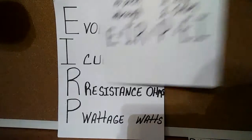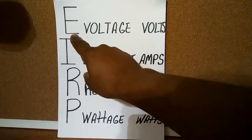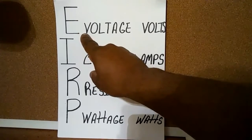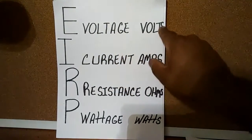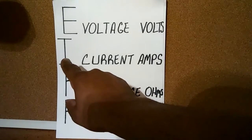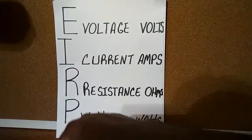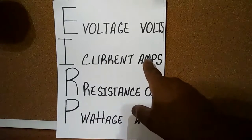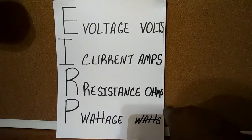Let's take a look at what each letter stands for. The E — the scientific name for E would be electromotive force, but in the electrical field we call it voltage, and it's measured in volts. The scientific name for I is intensity, but in the electrical field it's called current, which is measured in amps. R is for resistance, which is measured in ohms.